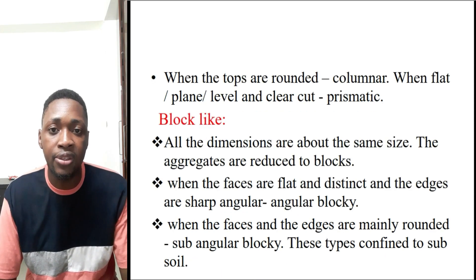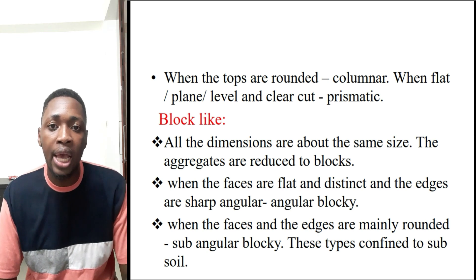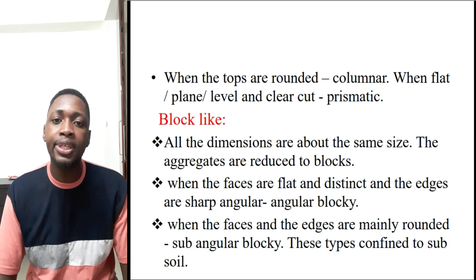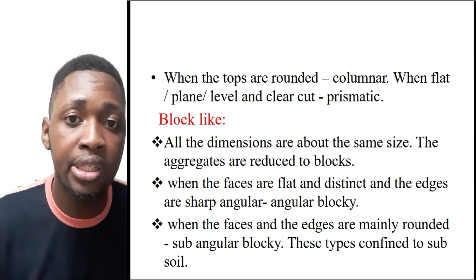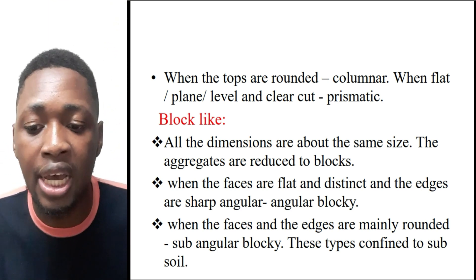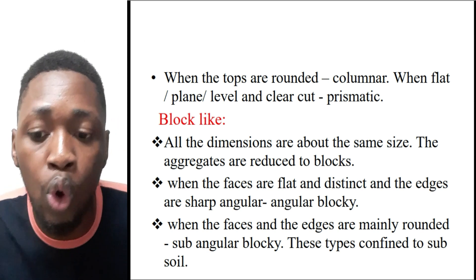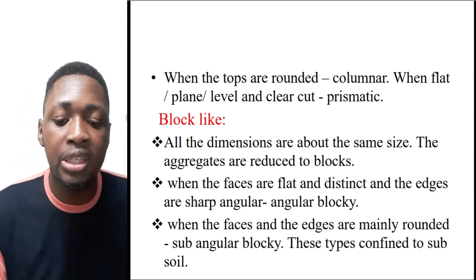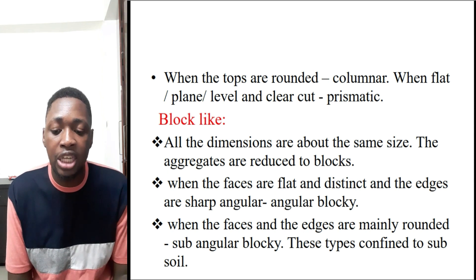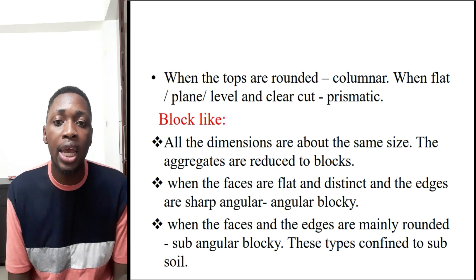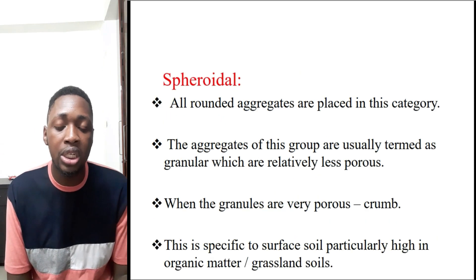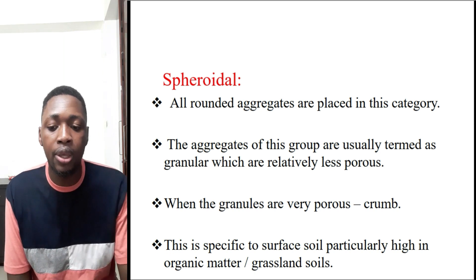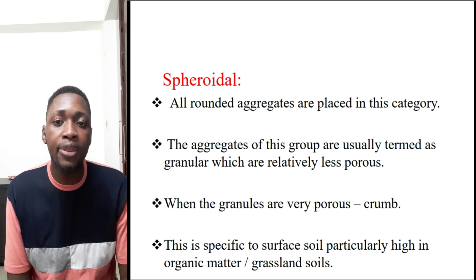We have the block-like structure, whereby all the dimensions are of the same size. The aggregates are reduced to blocks. When the faces are flat and distinct and the edges are sharp and angular, it is called angular blocky. But when the faces and edges are mainly rounded, it is called sub-angular blocky.